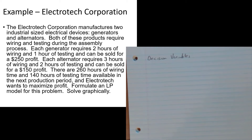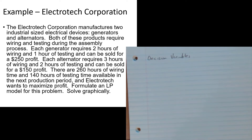The Electrotech Corporation manufactures two industrial-sized electrical devices: generators and alternators. Both of these products require wiring and testing during the assembly process. Right there I'm starting to think 'require' sounds like a constraint. It looks like I have a wiring constraint and a testing constraint. Right now it looks like I have two products - generators and alternators. So the first couple of sentences have given me a sense of what the decision variables and potential constraints might be.